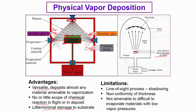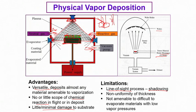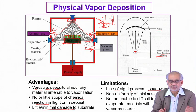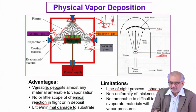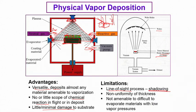There are also demerits: this is a line-of-sight process, so you can cover only the surface that directly sees the vapour. There could be a shadowing effect — if you have one component blocking another, a portion may get shadowed. We have to make sure that the vapour arrives uniformly, and the area of the vapour should be wider than the components being coated to ensure uniform coverage.